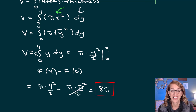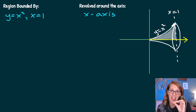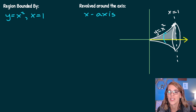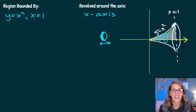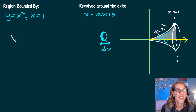Now let's revolve around the x-axis. In the second example, we're again looking at the parabola y equals x squared, but now bounded by the vertical line x equals one and the x-axis. You can see that area shaded — that's what we're revolving around the x-axis. Our cross sections are going to be circles, and they line up along the x direction. The thickness of each disk is in the x direction, so that's going to be dx. That means I want everything in terms of x.